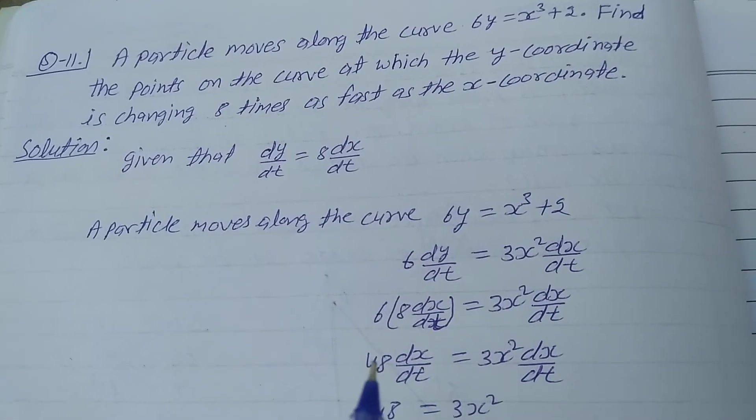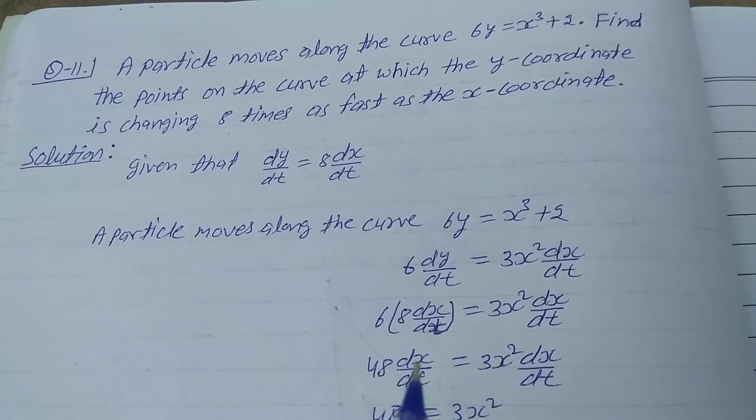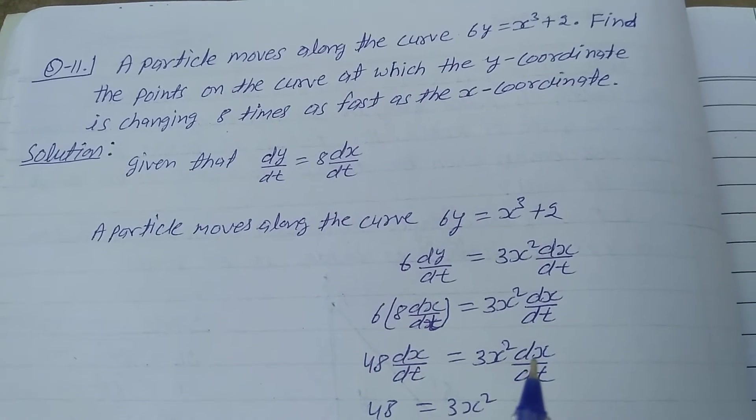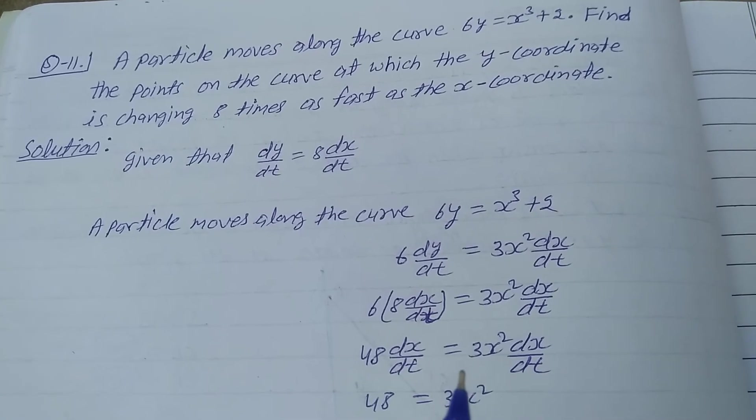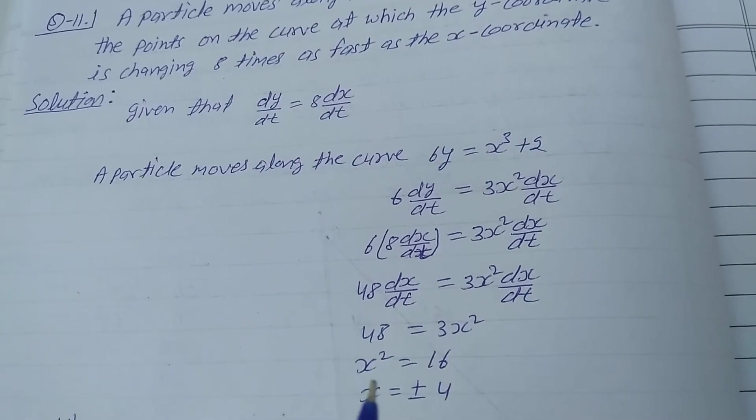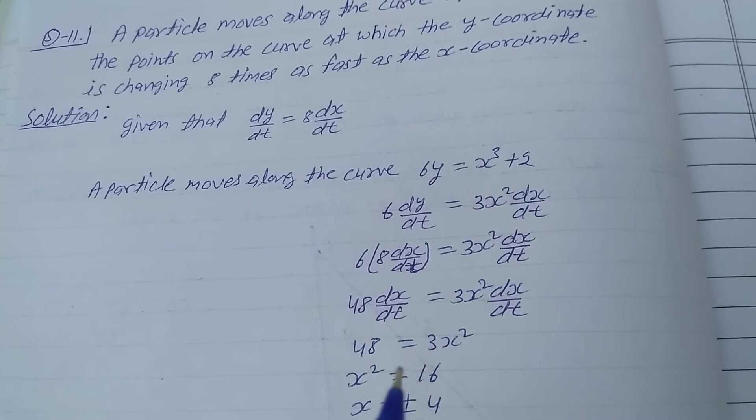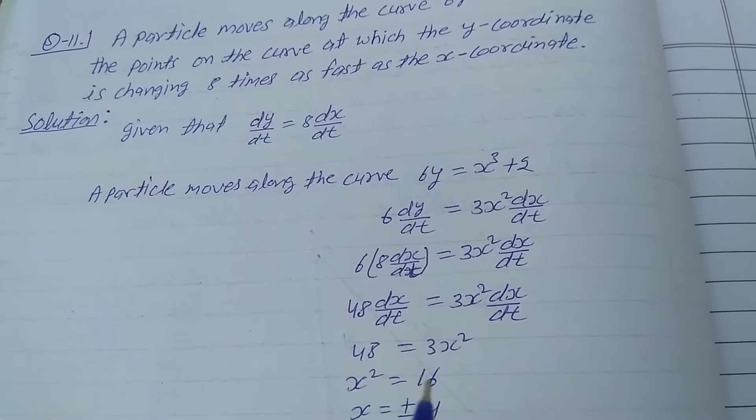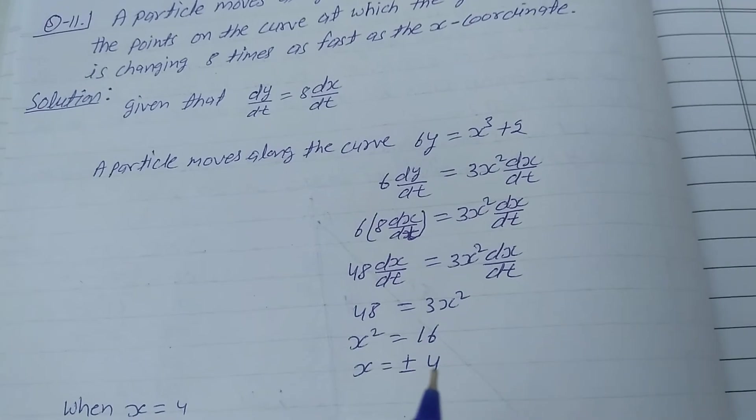Here is 48 dx/dt is equal to 3x² dx/dt. So dx/dt to dx/dt cancels, so 48 is equal to 3x². x² is equal to 16. So 3 divided into 48 is 16. x is equal to plus or minus 4.